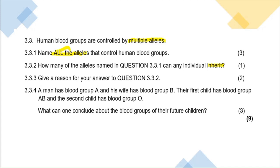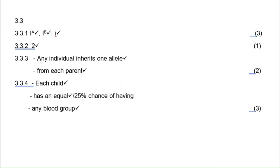An individual cannot be A, B, and O — it can only be A, B, or O, so the maximum it can inherit is two alleles. They're trying to catch you out here. An individual can only inherit one allele from the mother and one from the father. A man has blood group A and his wife has blood group B — we know these are dominant — and the first child has blood group AB, while the second child has blood group O.